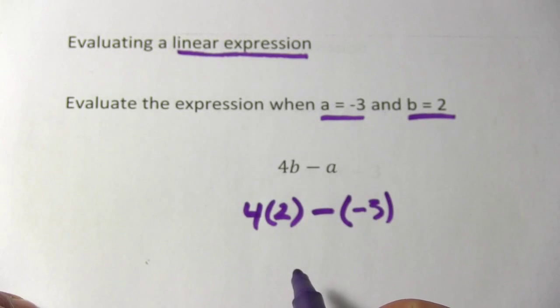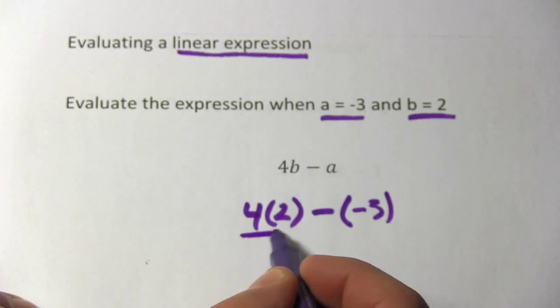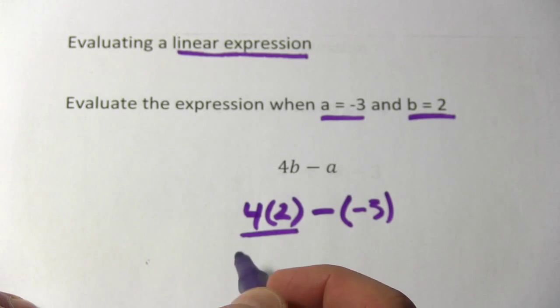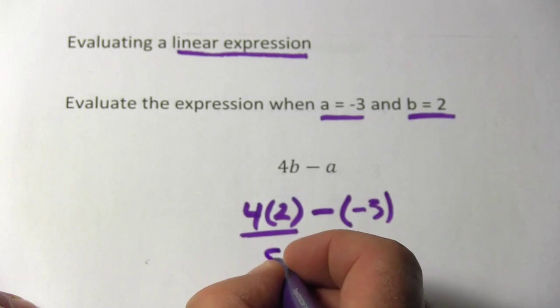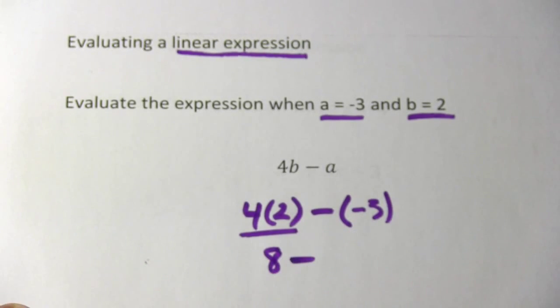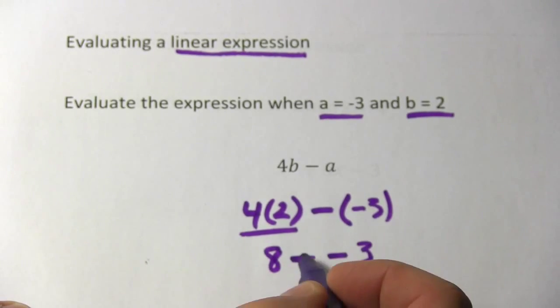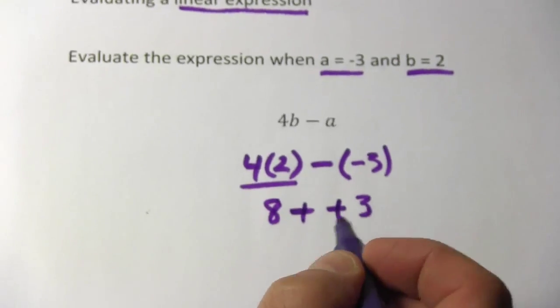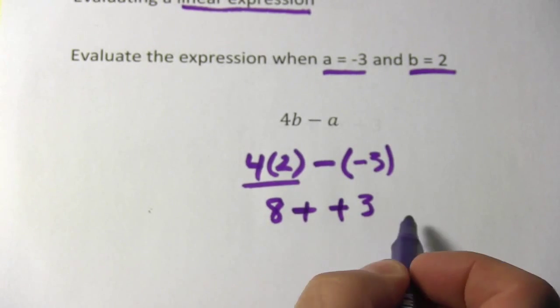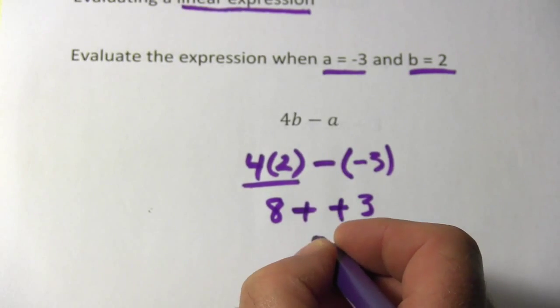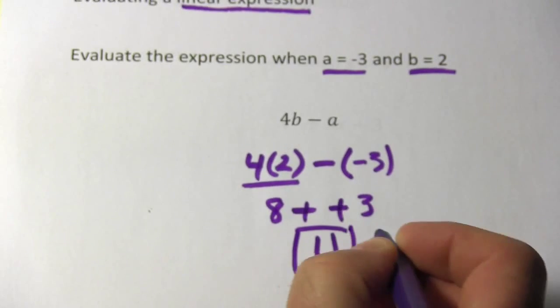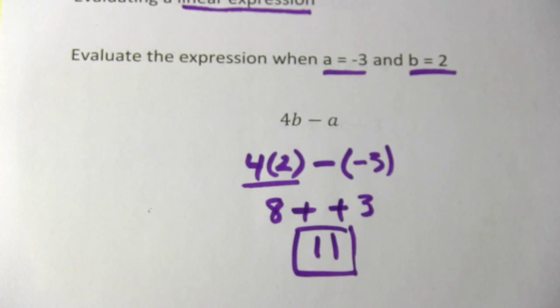Now we just need to resolve this. We'll use the order of operations. We need to do our multiplication and division first. There's just one piece of multiplication to do here. 4 times 2 is 8. So this is 8 minus a negative 3. That's the same thing as plus. When you have two negative signs in a row, you can turn them into a plus. So 8 plus 3 equals 11. And that is how to evaluate a linear expression.